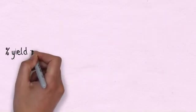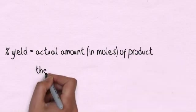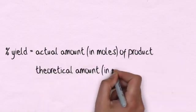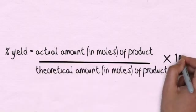The percentage yield can be calculated by taking the actual amount in moles of the product and dividing it by the theoretical amount in moles of the product that you should have made times 100.